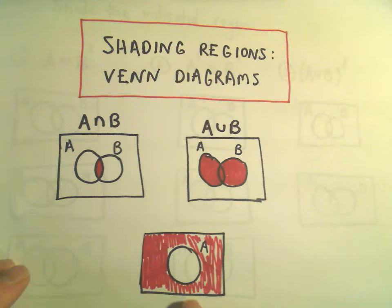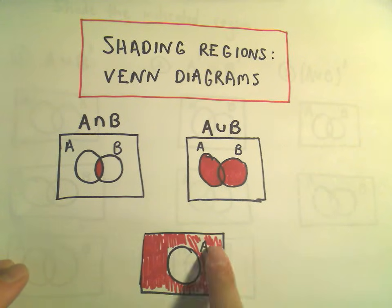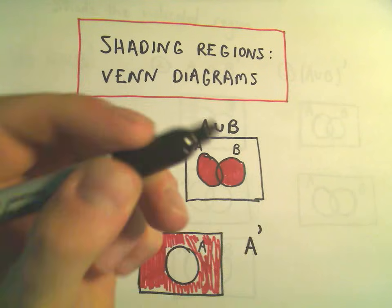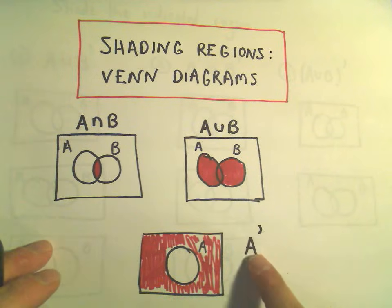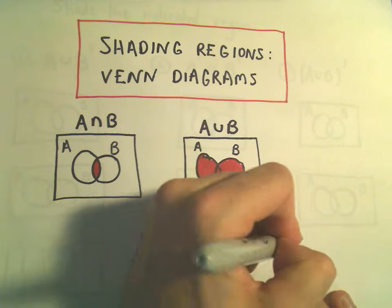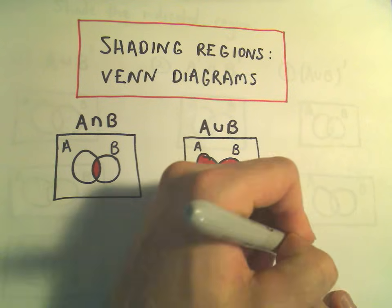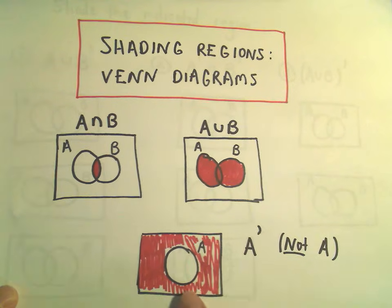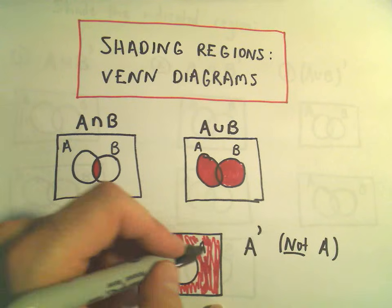Now, in my bottom picture here, we have circle A here in the middle, and everything outside of A is shaded. In this case, what we've shaded, we would label that as A prime, and what that stands for is the complement. This can basically be read as NOT A. So basically, you got shaded if you were NOT in circle A, which means we shade everything else.